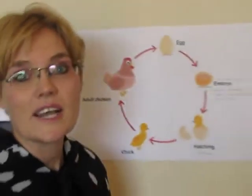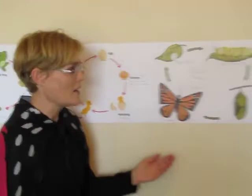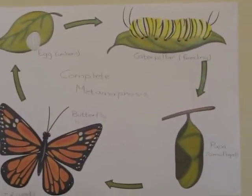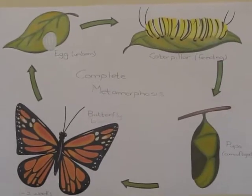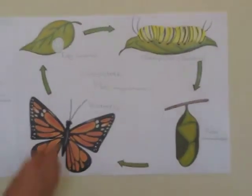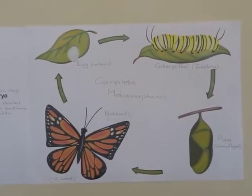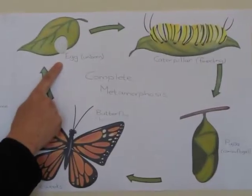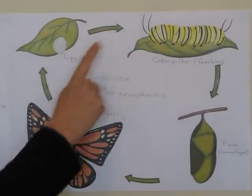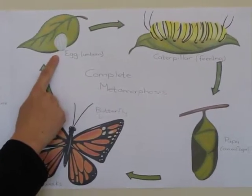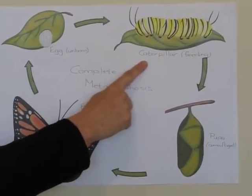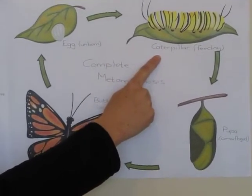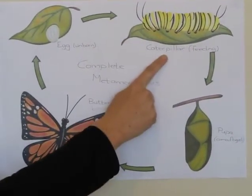First of all, let's look at the life cycle of the butterfly. Now we talk about metamorphosis — that's where you change. An animal in their lifespan, they change, and the butterfly goes through four stages. First of all, the egg — the unborn. So it starts with an egg. Then you become a caterpillar, where you wriggle and wiggle and eat a lot. This is the feeding stage.